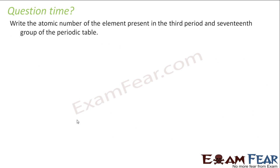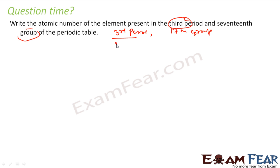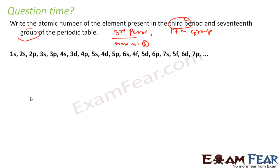Now, write the atomic number of the element present in the third period, 17th group. It is the third period, 17th group. That means the maximum value of n is 3. It is in the 3rd period, so the element must be somewhere in the range of elements from where the 3rd period starts to where it ends, before the 4th period begins.